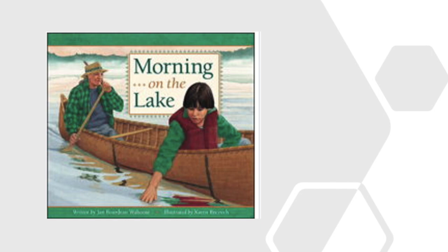Today we read the book Morning on the Lake, and we learned what the word silhouette meant. The word silhouette comes from the name of a French politician in the 1700s. Étienne de Silhouette forced the French people, especially the wealthy, to contribute a great amount of money to the war effort at the time.